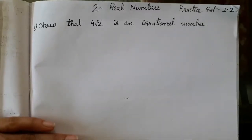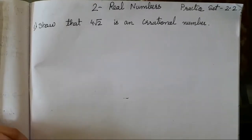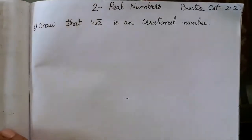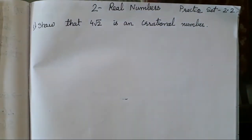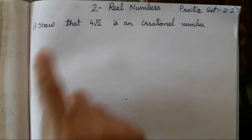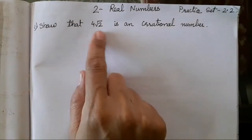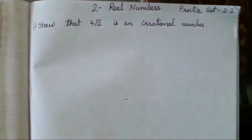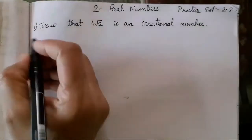Hello everyone, today we are going to do Chapter 2, Real Numbers, Practice Set 2.2. So let's start with the first question: show that 4√2 is an irrational number.